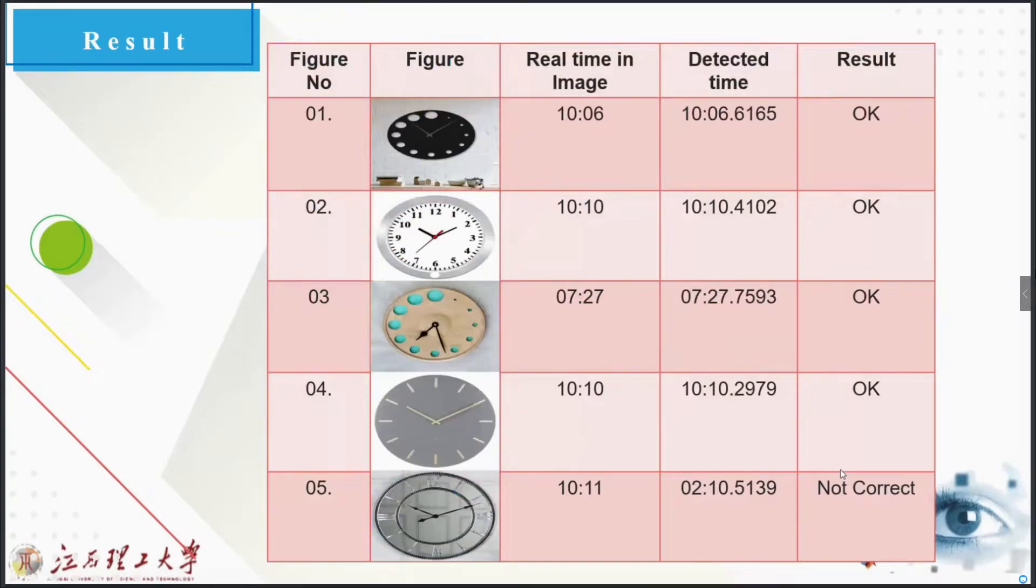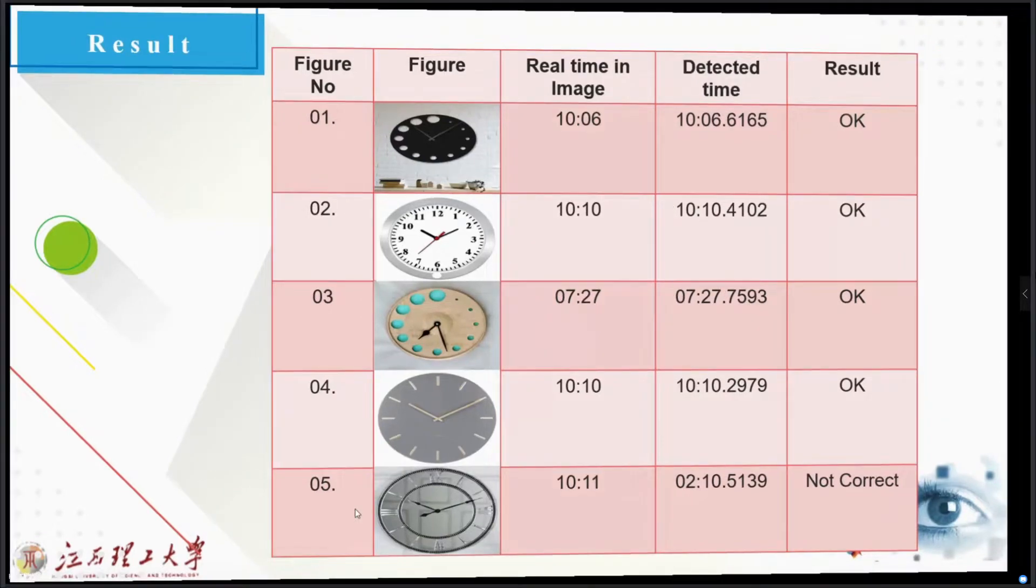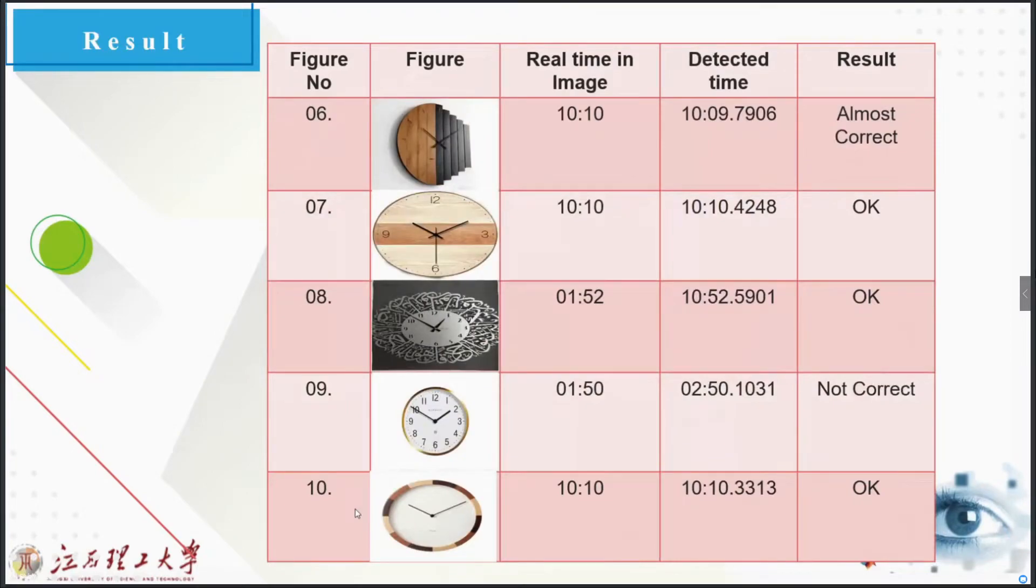Here are some pictures showing some real time and detected time. As you can see, the detected time and the real time are very near and very similar. We can see some problem in number five, which is the real time is 10:10:11, but the time detected was 2:10. As I said before, because the width of the hour hand and the watch hands are a little bit similar, the program got confused about this picture, so the answer was not correct.